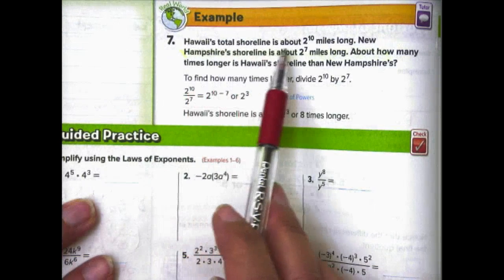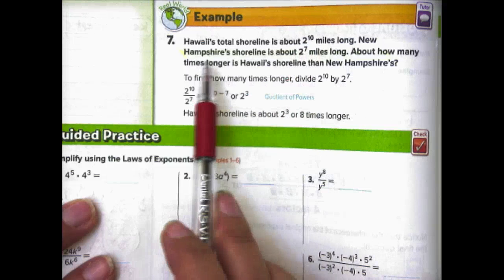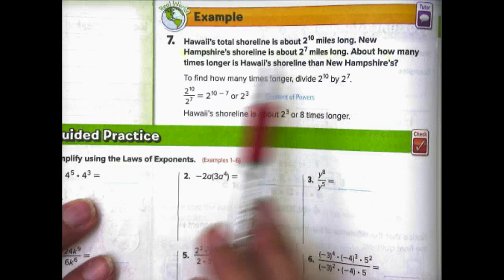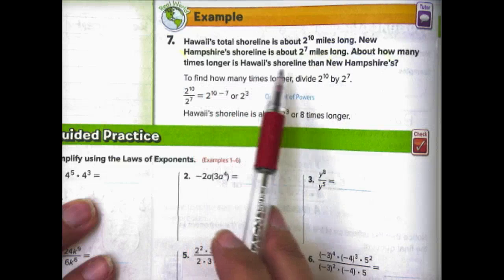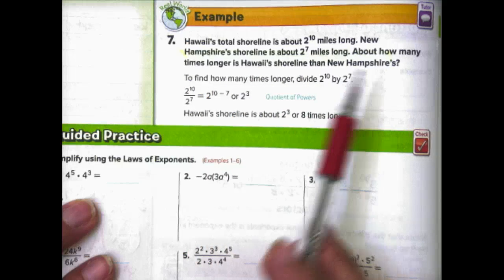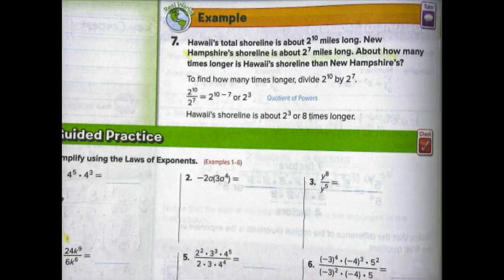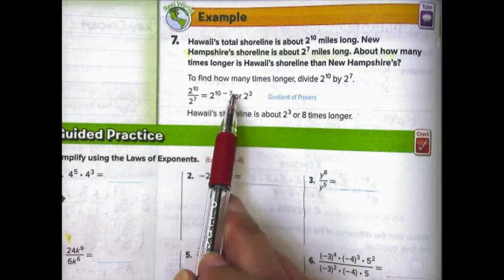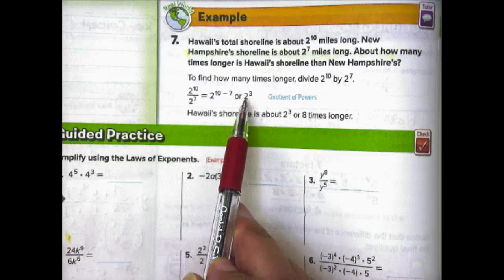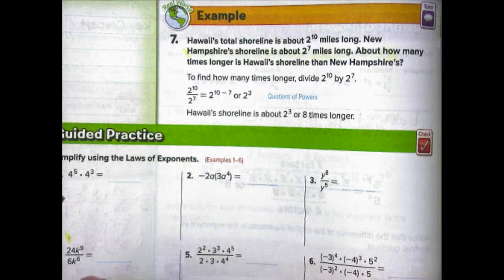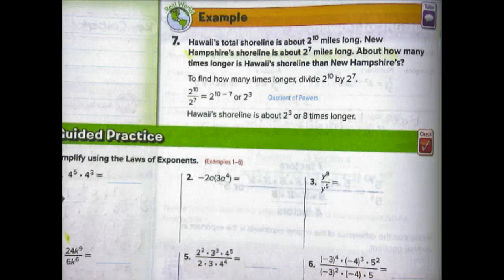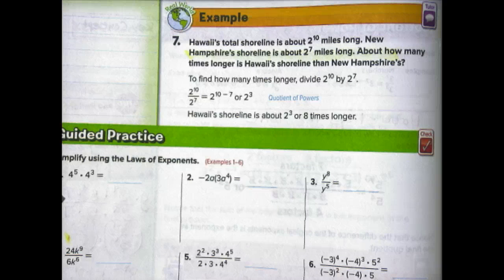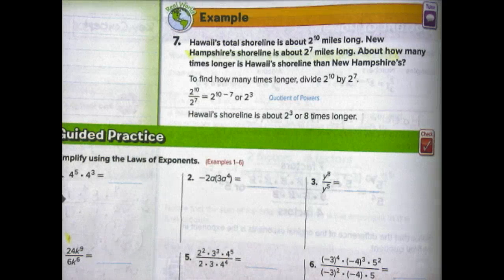Number 7 is a word problem: Hawaii's total shoreline is about 2 to the 10th miles long, and New Hampshire's shoreline is about 2 to the 7th miles long. About how many times longer is Hawaii's shoreline than New Hampshire's? Divide 2 to the 10th by 2 to the 7th, subtract the exponents, and get 2 to the 3rd, or 8 times longer. We'll look at more of these problems tomorrow — bring your notes and we'll check them and go through any questions.